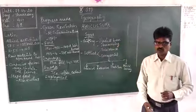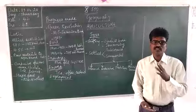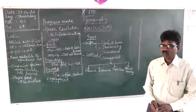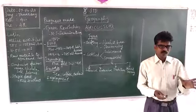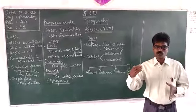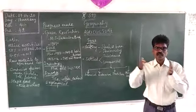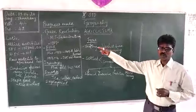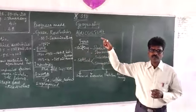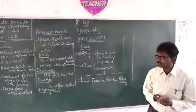It contributes 14.5% to the national income. What do you mean by this national income? The goods and services produced within the geographical frontier of a particular country. So 40% more than that it contributes to the national income.